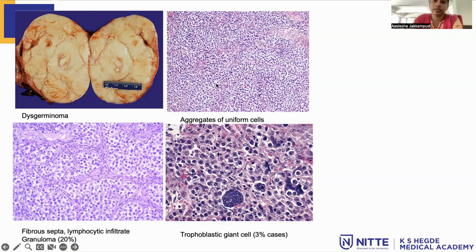Around 3% of cases will have trophoblastic giant cells. In these cases, there will be elevated HCG.